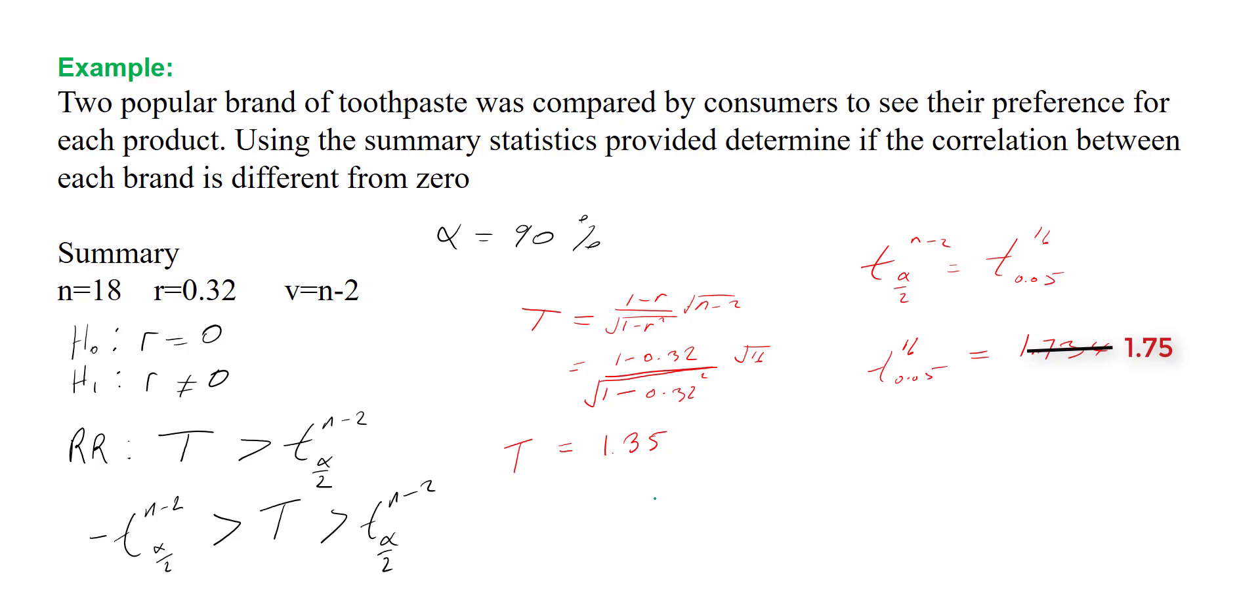Recall our rejection region: we reject if our test statistic is greater than 1.746 or less than negative 1.746. We have a value of 1.35. Now 1.35 is not greater than 1.746, which in this case implies that we cannot reject...